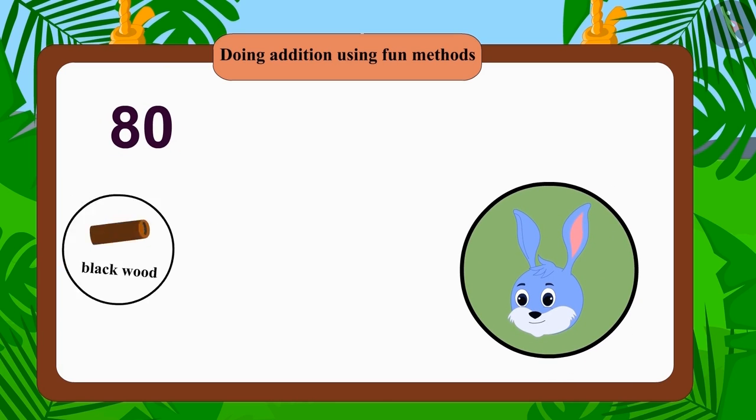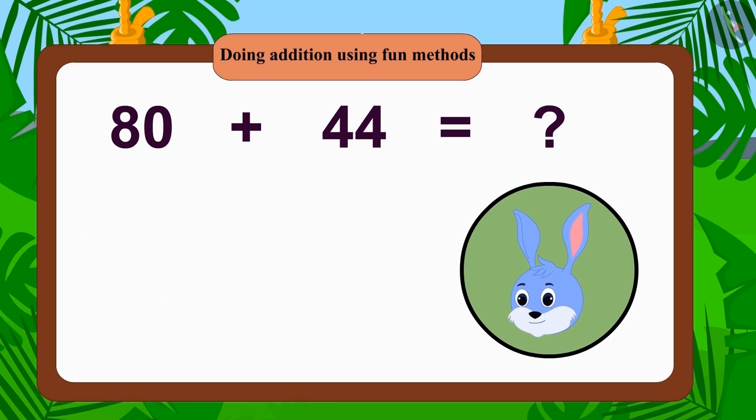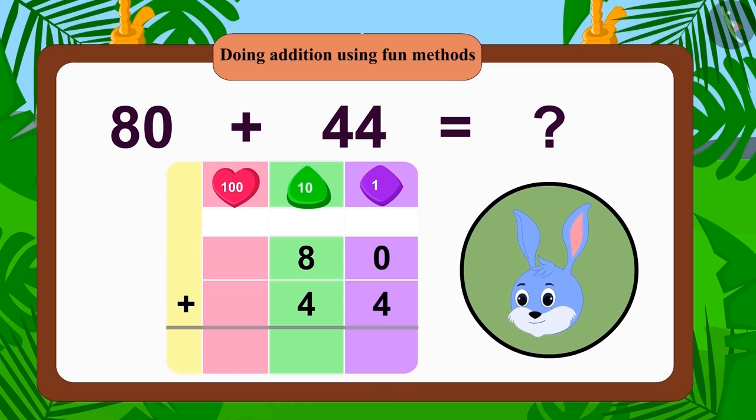If Bunny used 80 black wood and 44 yellow wood, would Bunny still have used only 124 wood? Children, you can find the answer to this question by using the process of adding two-digit numbers.